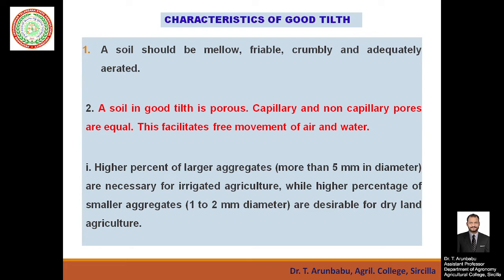The characteristics of good tilth: the soil should be mellow, friable, crumbly, and adequately aerated. A soil in good tilth is porous, with capillary and non-capillary pores roughly equal — capillary pores contain water molecules and non-capillary pores contain air. This facilitates free movement of air and water. Higher percentage of larger aggregates (greater than 5 mm diameter) are necessary for irrigated agriculture, while smaller aggregates (1–2 mm diameter) are desirable for dryland agriculture for moisture conservation.